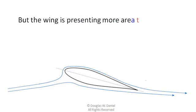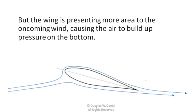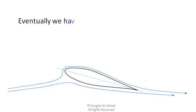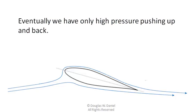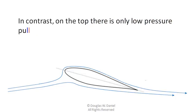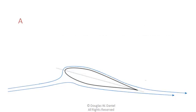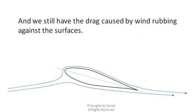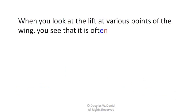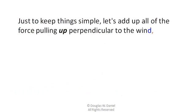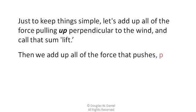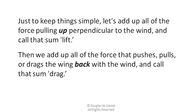But the wing is presenting more area to the oncoming wind, causing the air to build up pressure on the bottom. Eventually, we have only high pressure pushing up and back. In contrast, on the top, there is only low pressure pulling up and back. We still have the drag caused by the wind rubbing against the surfaces. Let's add up all the forces pulling up perpendicular to the wind and call that total lift. Then we add up all the force that pushes, pulls, or drags the wing back with the wind and call that total drag. That's the convention.